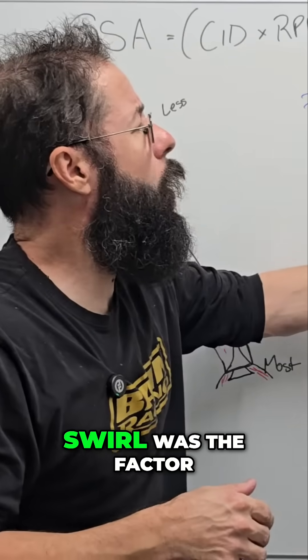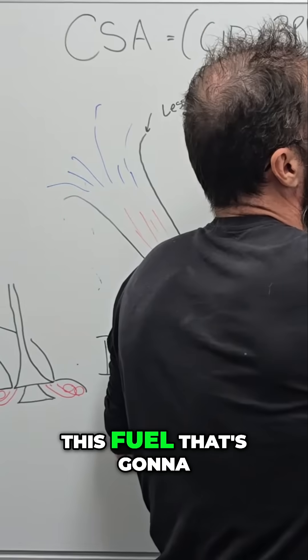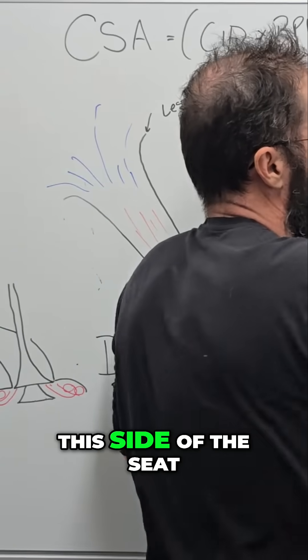But yeah, swirl was the factor to try and help this fuel that's going to end up biased on this side of the seat.